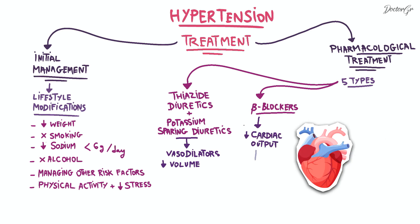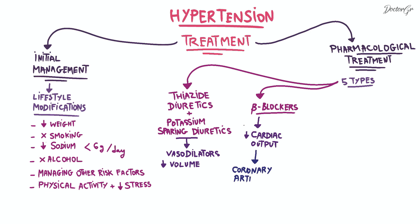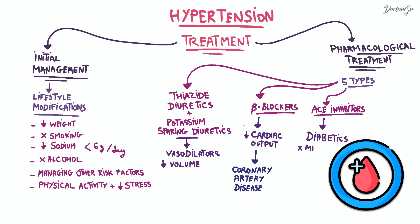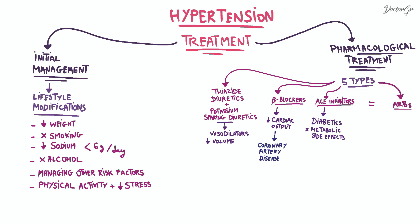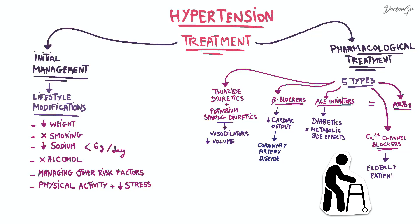ACE inhibitors are commonly used in diabetic patients due to their lack of metabolic side effects. ARBs have similar effects and contraindications as ACE inhibitors. Calcium channel blockers are preferred in elderly patients. These medications will be discussed in more detail in separate videos.